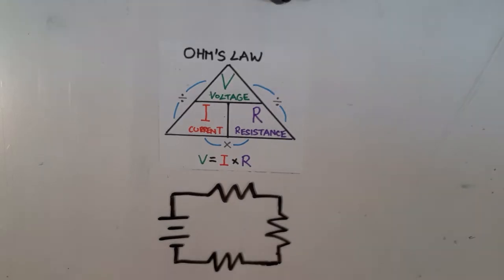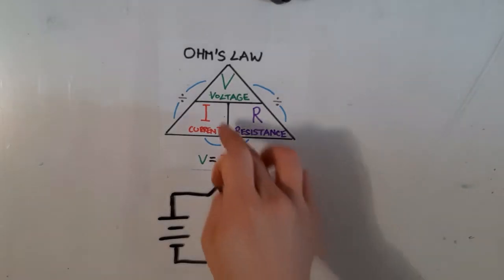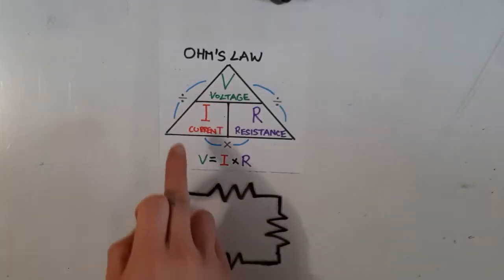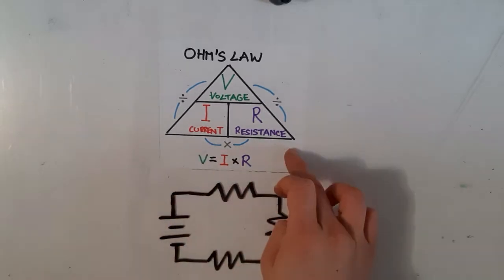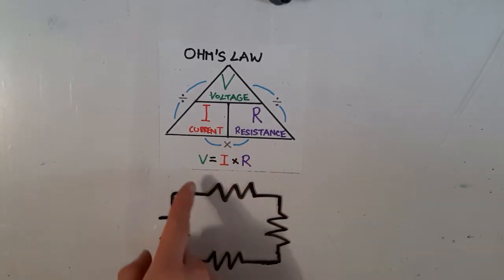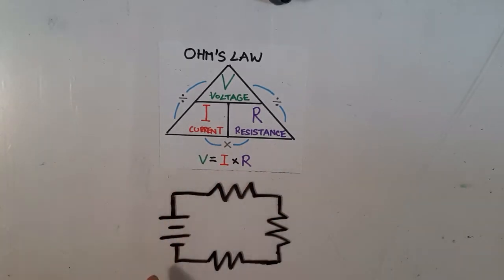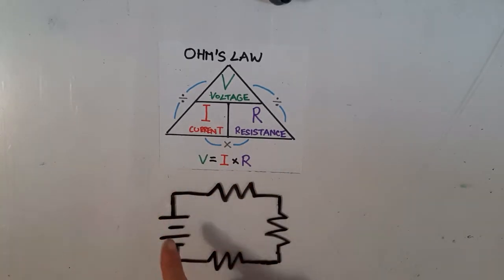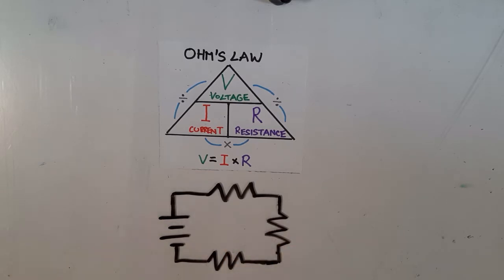In this video, we're going to talk about how we can find voltage, current, and resistance in series circuits — so there's still one path for the electrons to flow — but what happens when there's more than one resistor.